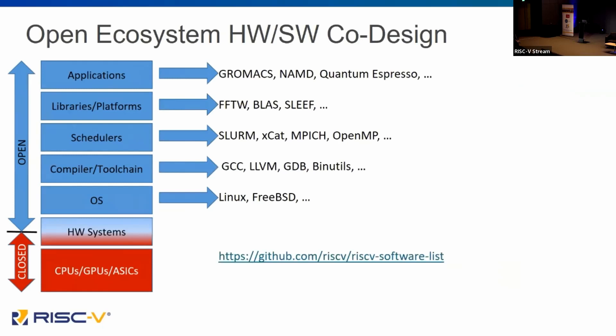There's a collection of these applications and software on the RISC-V GitHub website that you can see — it's a little bit deprecated but it's a good reference. We're also building a system which allows us to compile workloads, applications, and libraries to see if they work on RISC-V. But fundamentally, in this world of hardware-software co-design, we've been hindered by closed ecosystems for CPUs, GPUs, and ASICs.